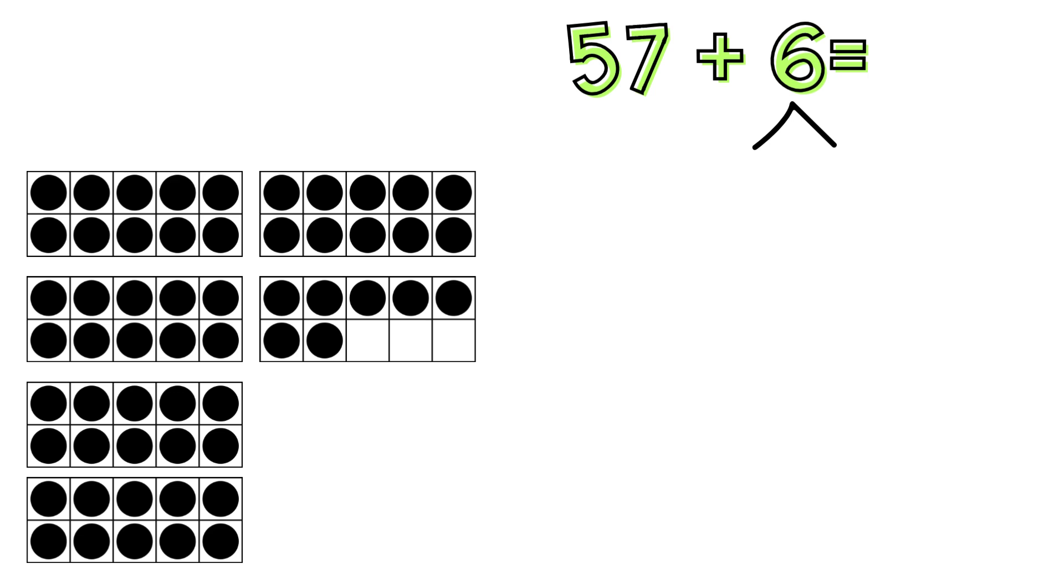Here's 57 in 10 frames. We need to add 6, so we're going to break up the 6 by adding some in the last 10 frame and putting the rest outside. How many chips do we need to fill the last 10 frame? We need 3 chips to fill the last 10 frame. Did you get that?